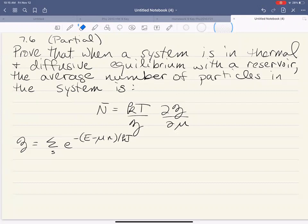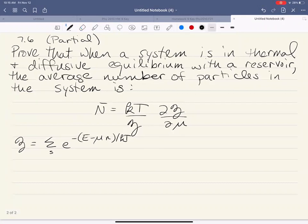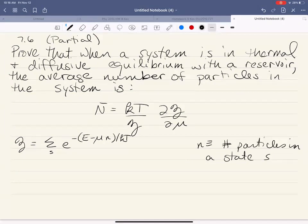Now here I'm using little n as the number of particles in a state. So that's the number of particles in the state s and big N is the total number of particles. That's my notation for that.